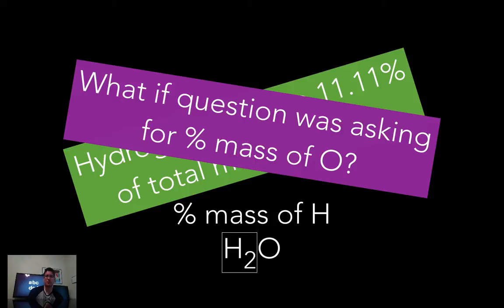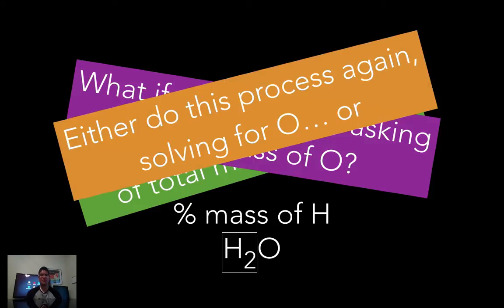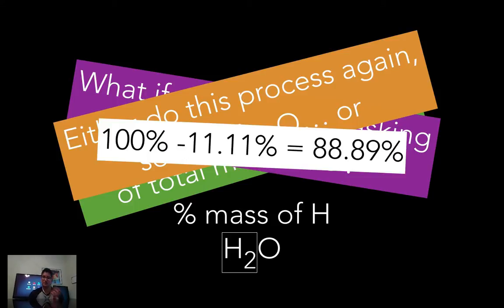So what if the question was asking for percent mass of oxygen? Well, there's a couple ways you could approach this. You can either do this process again by solving for oxygen, or since hydrogen takes up 11 percent of the mass, mathematically 100 minus 11 would be 88.89 percent. So oxygen takes up 88.89 percent or 89 percent of the total mass of water.